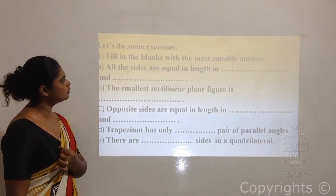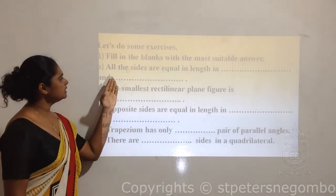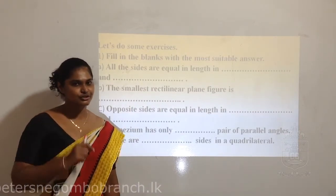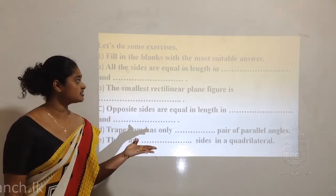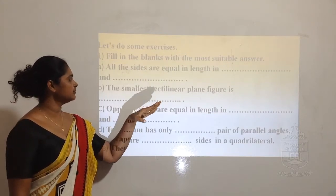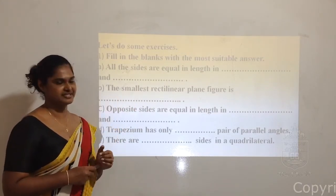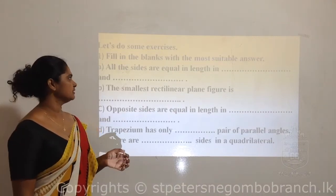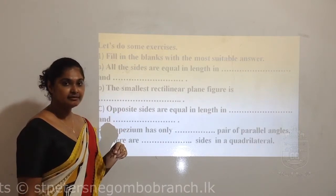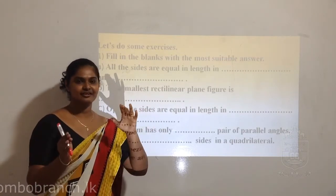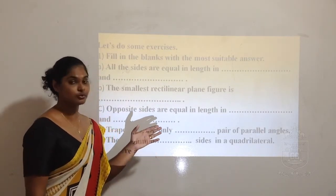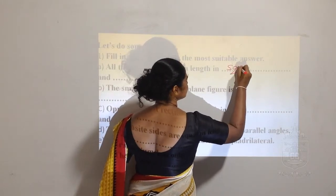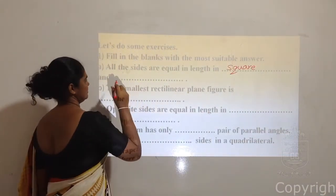Let's do some exercises. Fill in the blanks with the most suitable answer. A: All the sides are equal in length in blank and blank. Now go to your previous knowledge - we learned about various shapes and figures. These two are quadrilaterals. All the sides are equal in the square and the rhombus - the crooked square is known as the rhombus. So the answers are square and rhombus.